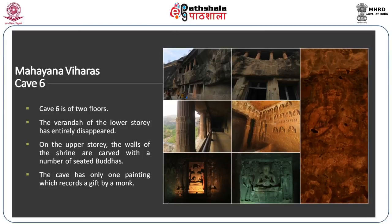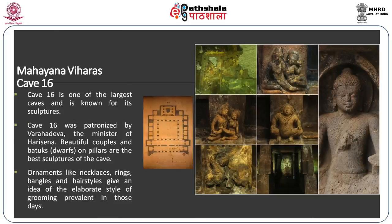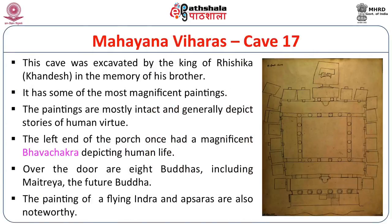Cave 6 is of two floors. The veranda of the lower story has entirely disappeared. On the upper story, the walls of the shrine are carved with a number of seated Buddhas, and the cave has only one painting which records a gift by a monk. Cave 16 of the Mahayana Viharas is one of the largest and is known for its sculptures, patronized by Varaha Deva, the minister of Harisena. Beautiful couples, dwarfs on pillars are the best sculptures of these caves. Ornaments like necklaces, rings, bangles and hairstyles give an idea of the elaborate style of grooming prevalent in those days. This cave was excavated by the king of Rishika Khandesh in memory of his brother.